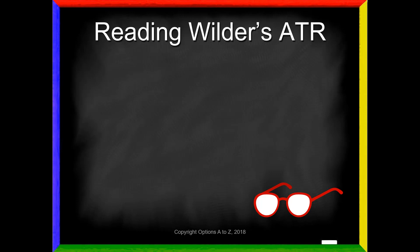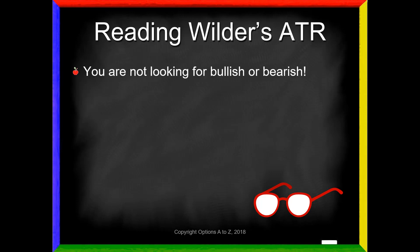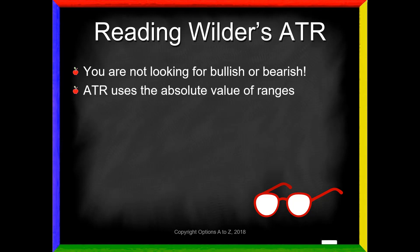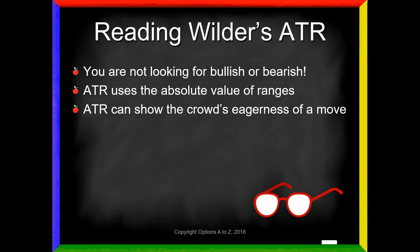How do we read Wilder's average true range? Most importantly, you are not looking for bullish or bearish. Too many times new traders see the average true range line rising and think it means we're bullish or overbought — not true. It just means the change in stock prices, whether going up or down, is getting bigger. The volatility is rising. Also remember, average true range uses absolute values, so we get no negative values. We can use ATR to show the crowd's eagerness. If you see a big move in the stock price going up but the ATR reading doesn't move much, that might show there's not a lot of enthusiasm behind that move.